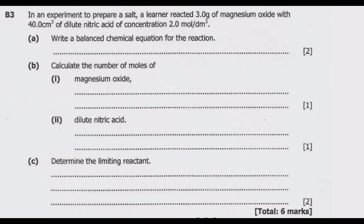The learner reacted 3.0 grams of magnesium oxide with 40 cm³ of dilute nitric acid of concentration 2.0 moles per dm³. Question (a): write a balanced chemical equation for the reaction — we are reacting magnesium oxide with the nitric acid.